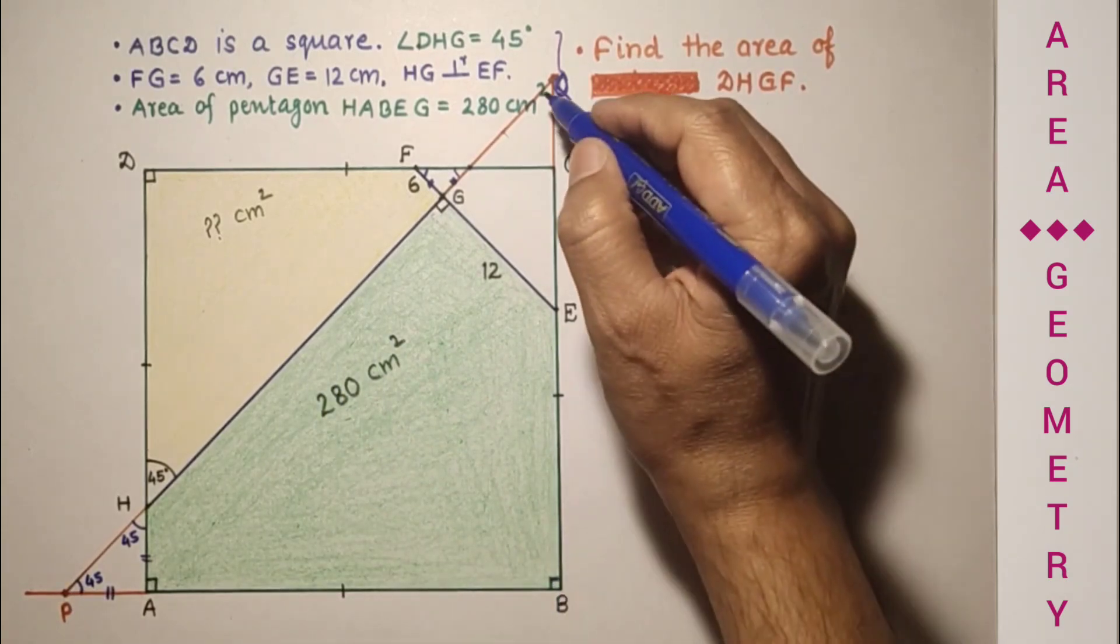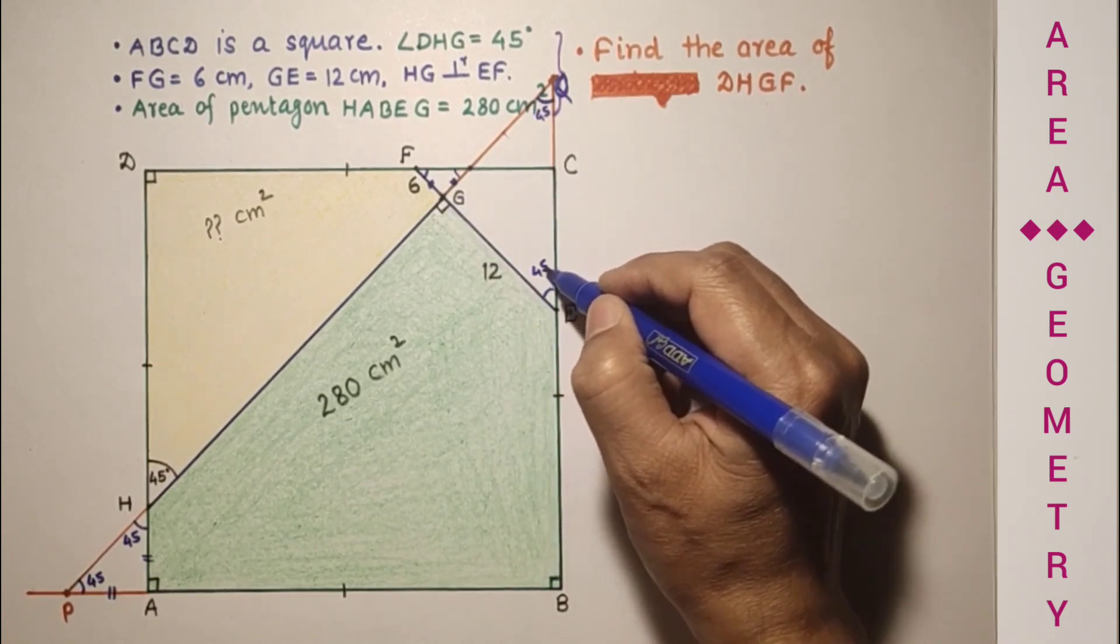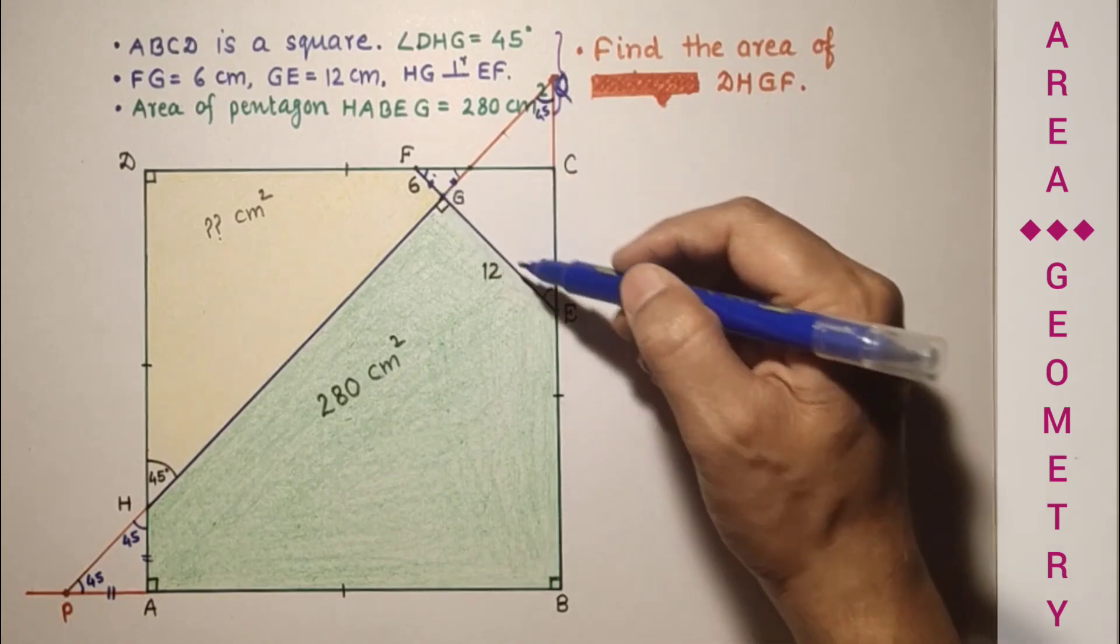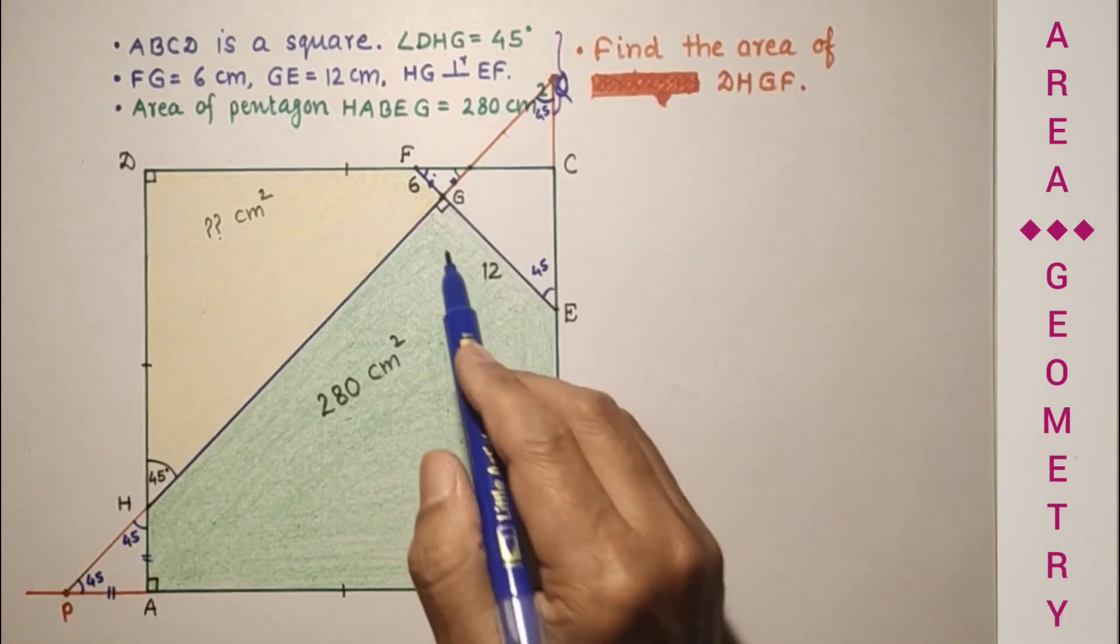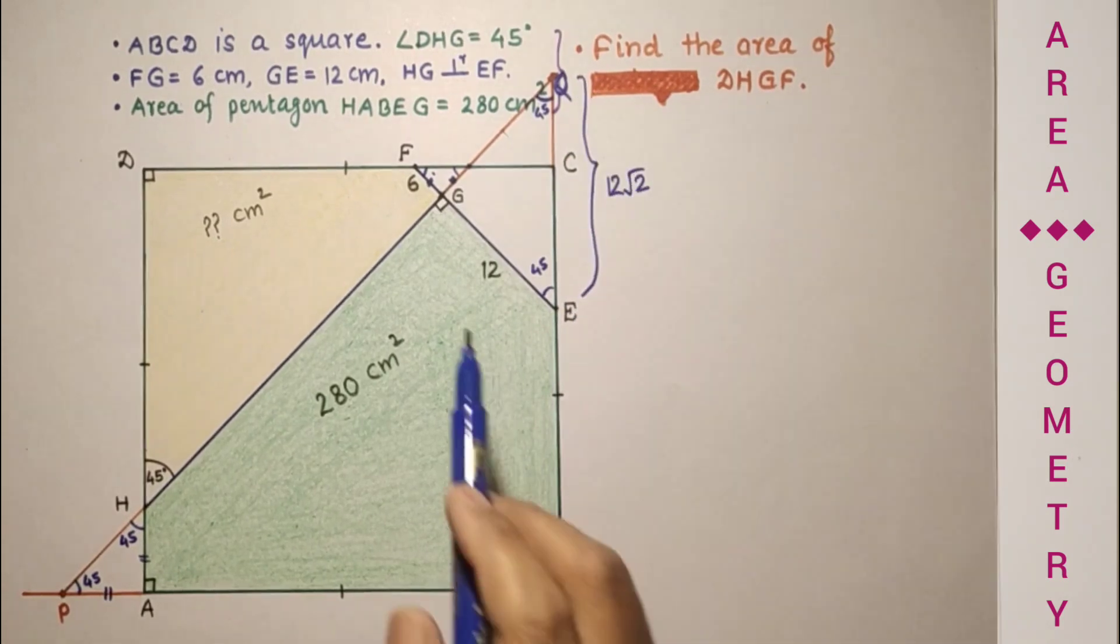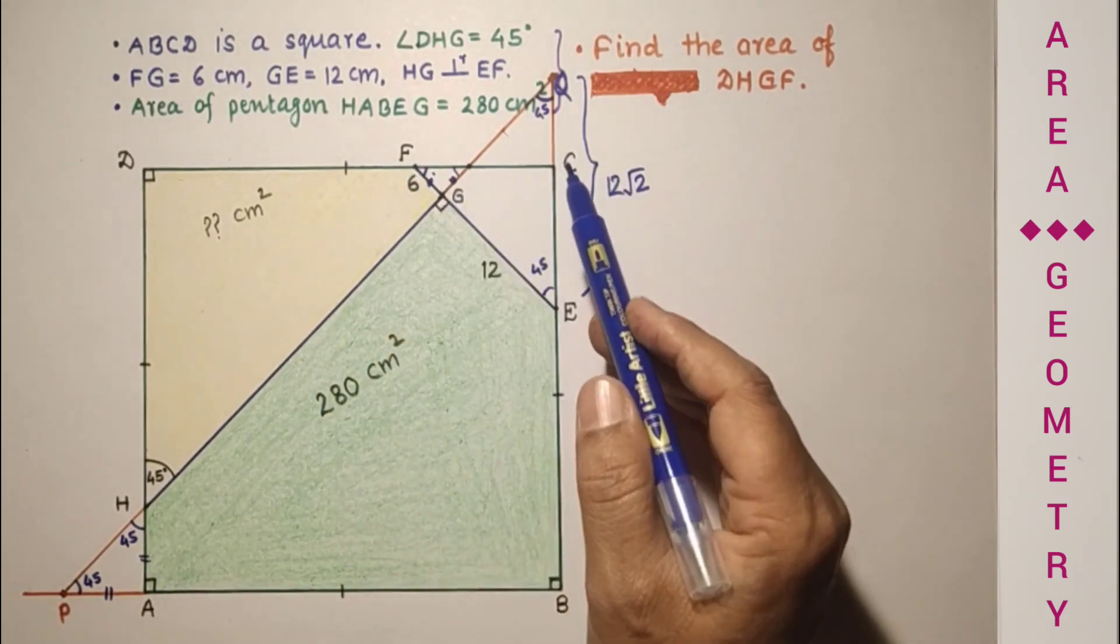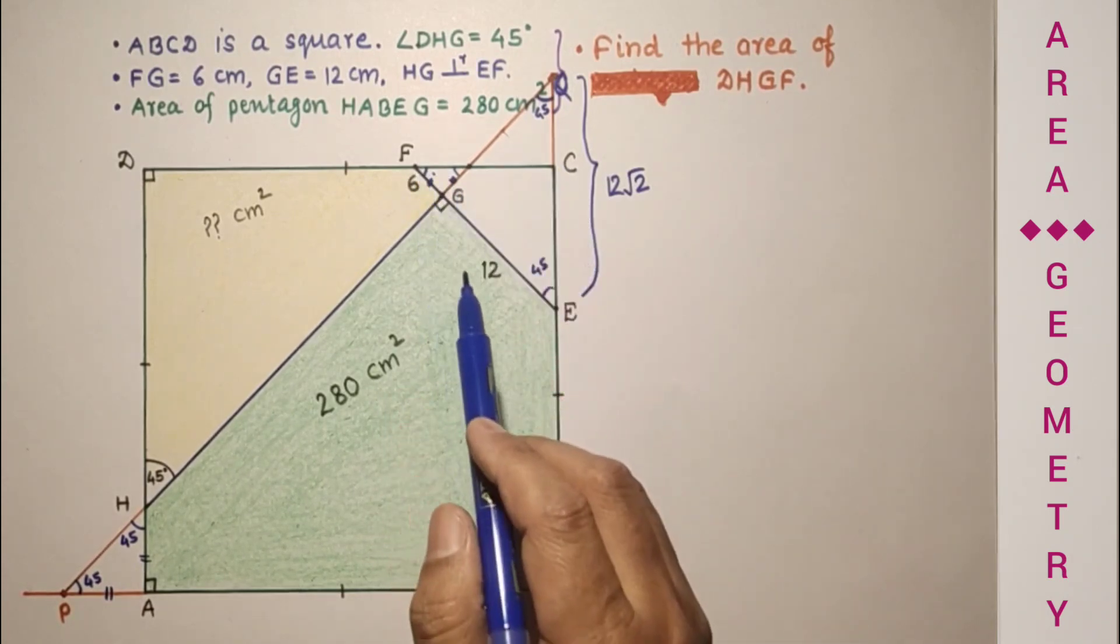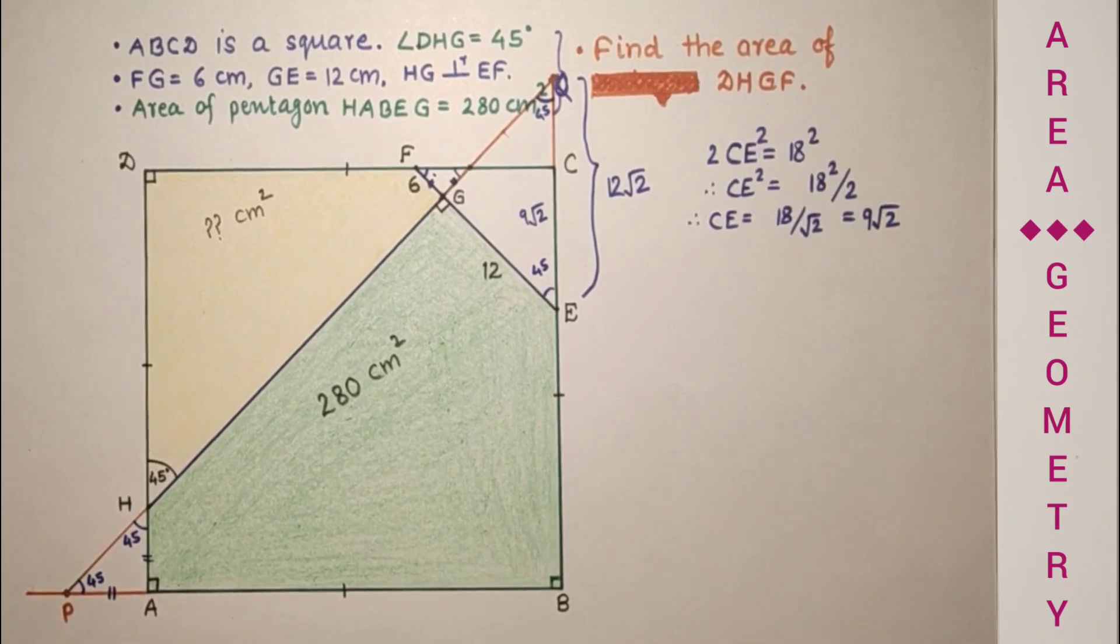This is 45, this is 90, so this will also be 45. This is 90, so this is 45. This is 45, 45, 45, so it means this GQ is equal to GE. So this will be 12. This GQ is 12 and this GE is 12, so this QE will be 12 root 2. This FE is equal to 12 plus 6, which is 18. So 18 square is equal to FC square plus CE square.